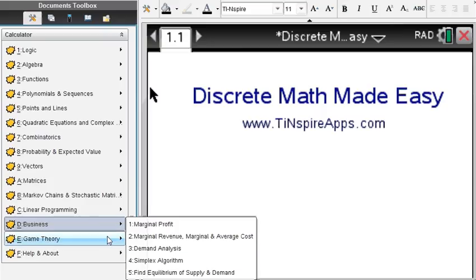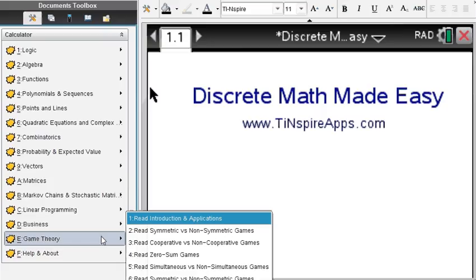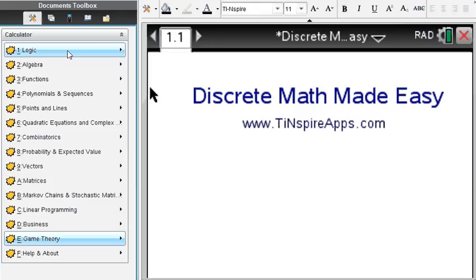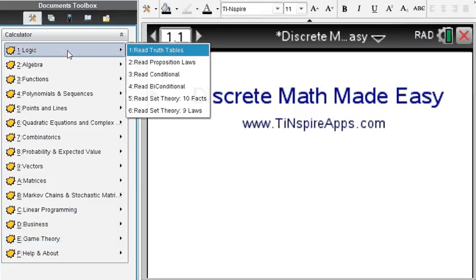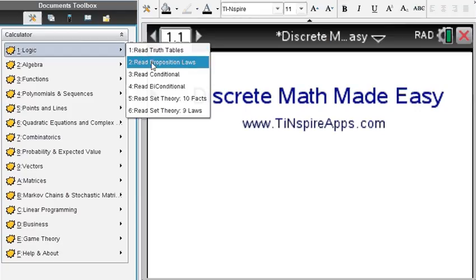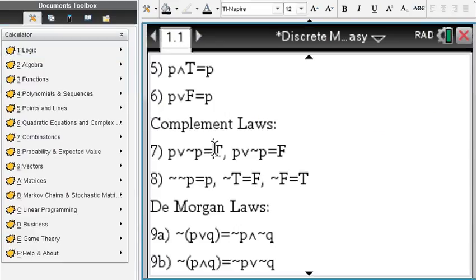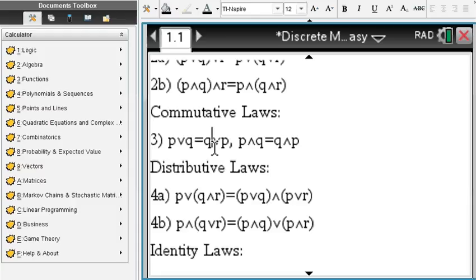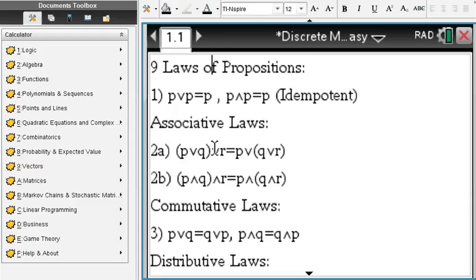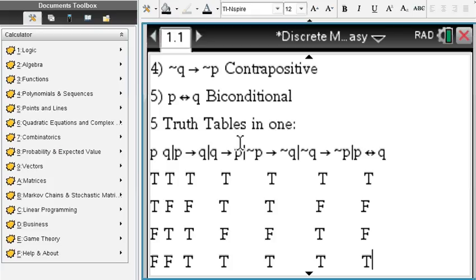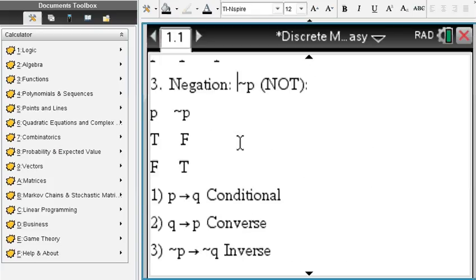Linear programming and the famous simplex algorithm, business applications such as marginal profit and demand analysis, and also game theory. It is a very complete app. You will see step-by-step solutions and you also get to read about important laws, such as proposition laws. You click them and you can scroll through them, or look up truth tables, no problem at all.